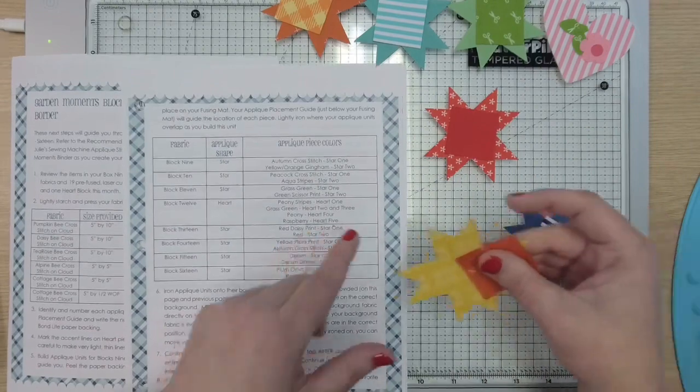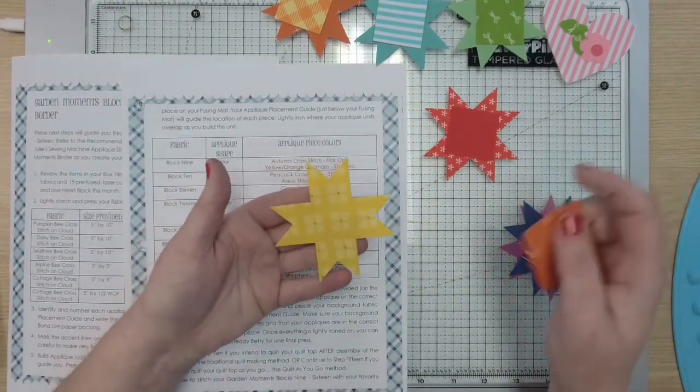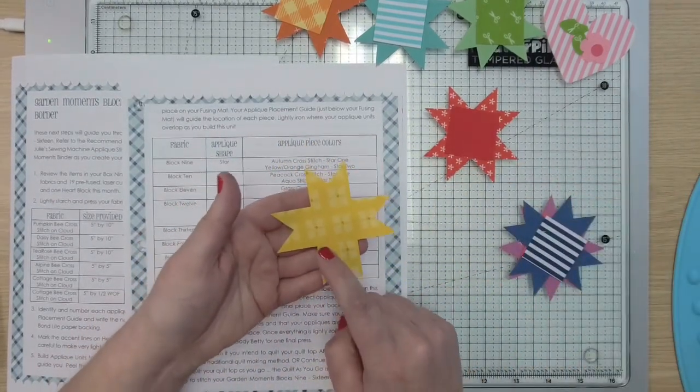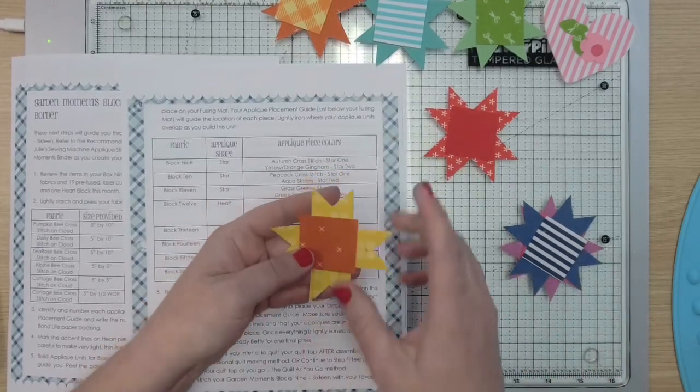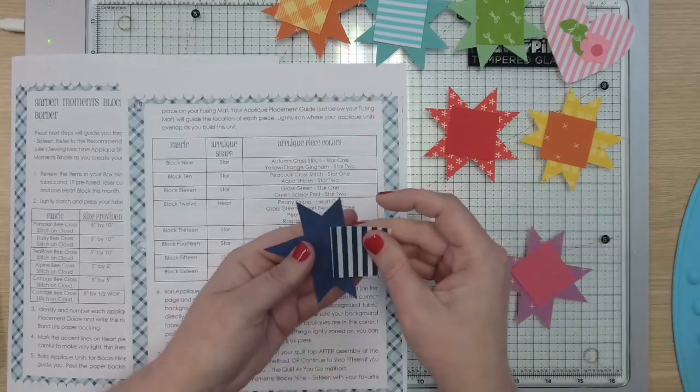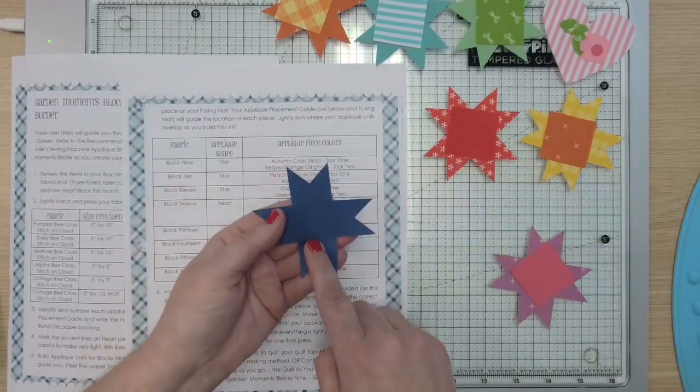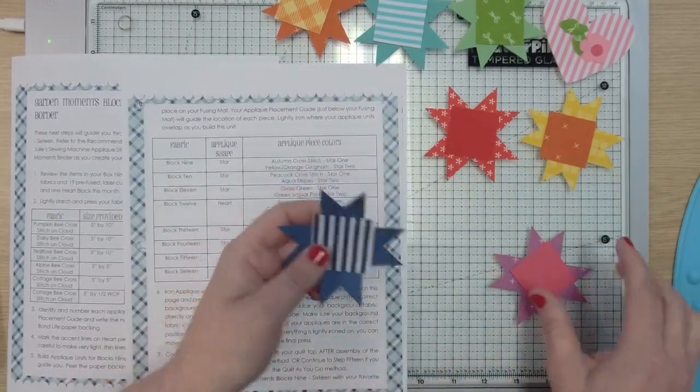Block 14 you have a yellow square plaid. I call it yellow square plaid—I forget what it's actually called, yellow daisy plaid or something—and then you have again the autumn for the center, autumn cross stitch. Then for block 15 you have a denim star with matching stripes in the center.